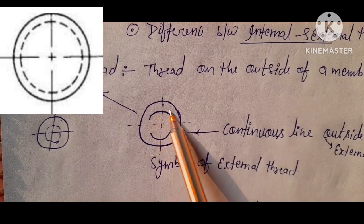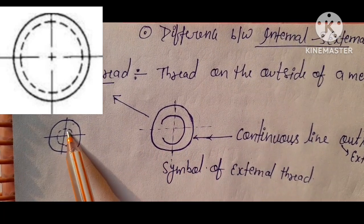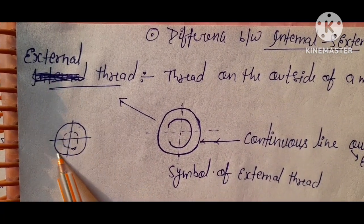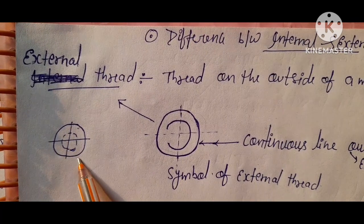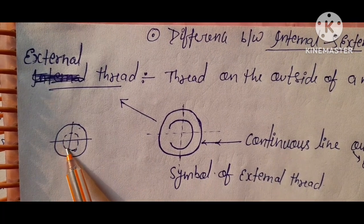And internal circle having dotted line. You see here, this is external thread. Outer side having continuous line and inner side having dotted line.